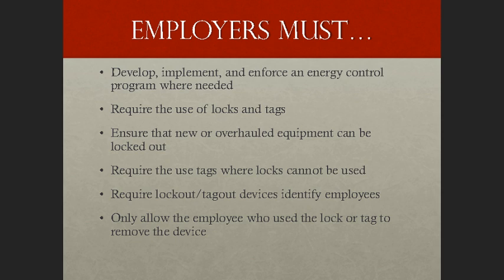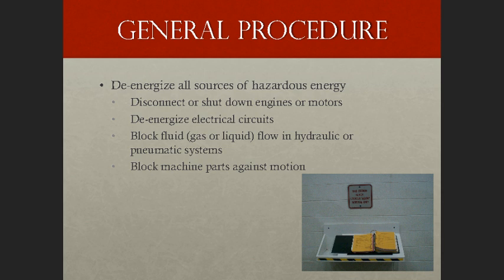Finally, employers must only allow the employee who applied the lock or tag to remove the device, though there are special cases where this isn't always possible. The first step in the general Lockout Tagout procedure is to de-energize all sources of hazardous energy — that means disconnecting or shutting down engines or motors, de-energizing electrical circuits, blocking fluid flow in hydraulic or pneumatic systems, and blocking machine parts against motion.